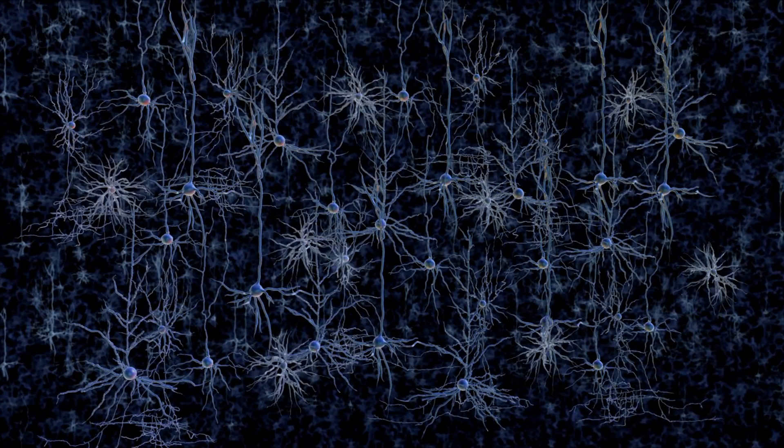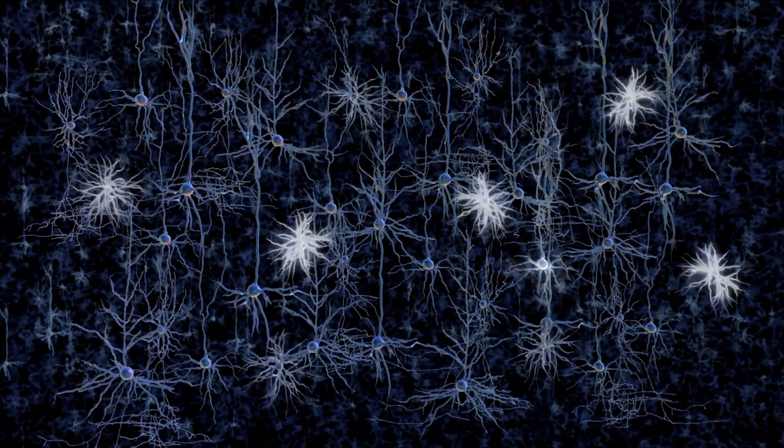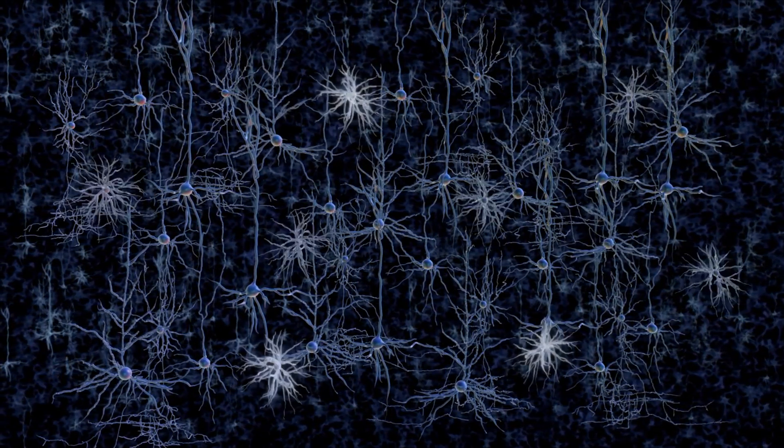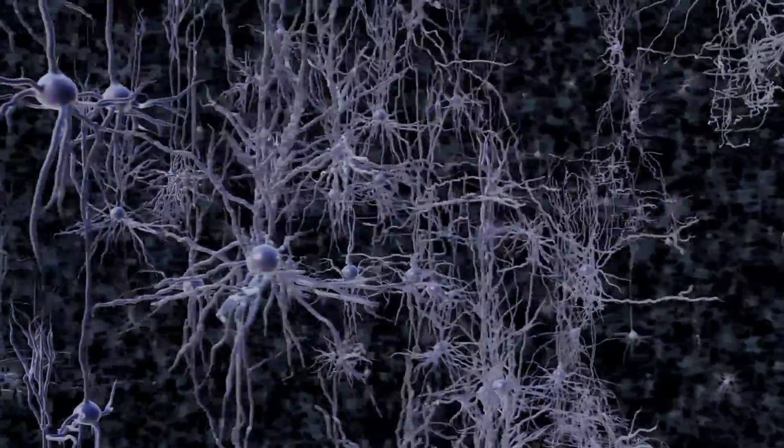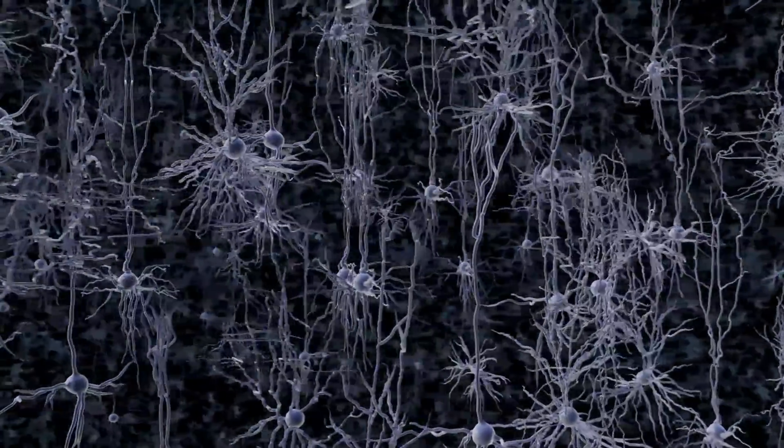If we could figure out the role that each of these cell types plays in the brain, we could understand how they work together to create thoughts, emotions, and behaviors, and how flaws in specific cell types may lead to devastating brain disorders like schizophrenia, Parkinson's, and depression.